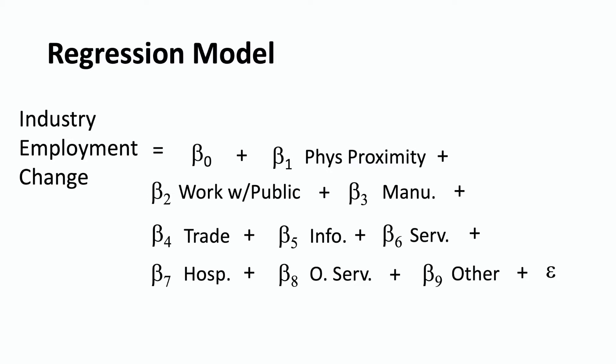The second variable is work with public, and that's the percentage of employment in the industry in occupations where people work with the public. For instance, my job as an economics professor involves working with students and other people, so my job will be counted among those where I work with the public. The next few variables — manu, trade, info, serve, hosp, oserve, and other — are industry dummy variables. Manu stands for manufacturing, trade is retail or wholesale trade, info is the information industry, serve covers various services, and hosp stands for hospitality, like restaurants and hotels.